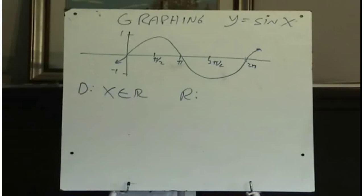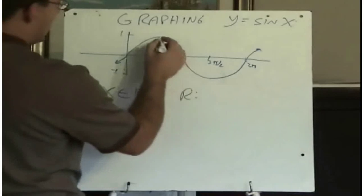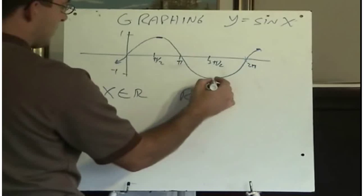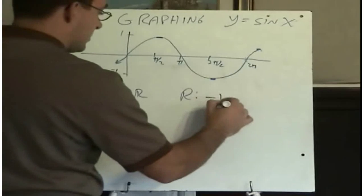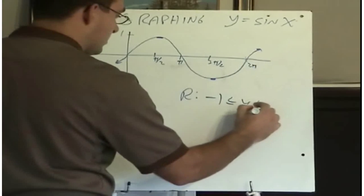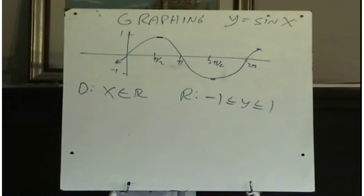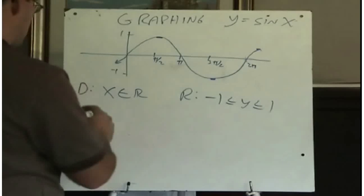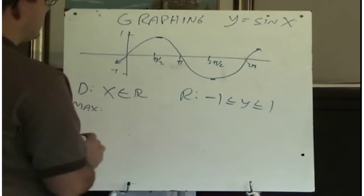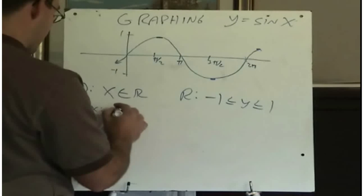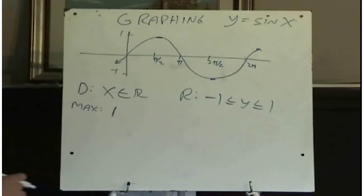What about its range? Well, it doesn't go any higher than 1, and it doesn't go any lower than minus 1, but it appears to be all values in between. So from the graph, we can see that y is greater than or equal to negative 1, and less than or equal to positive 1.